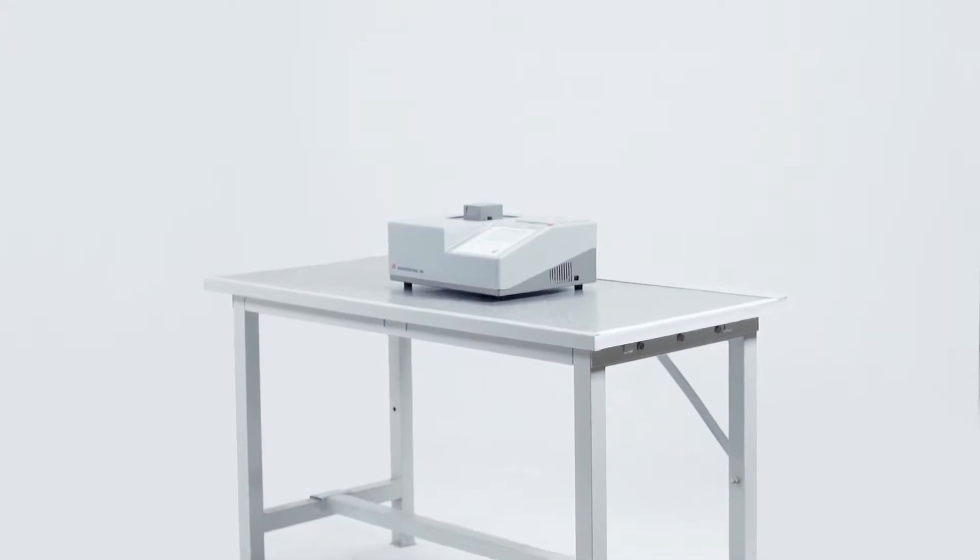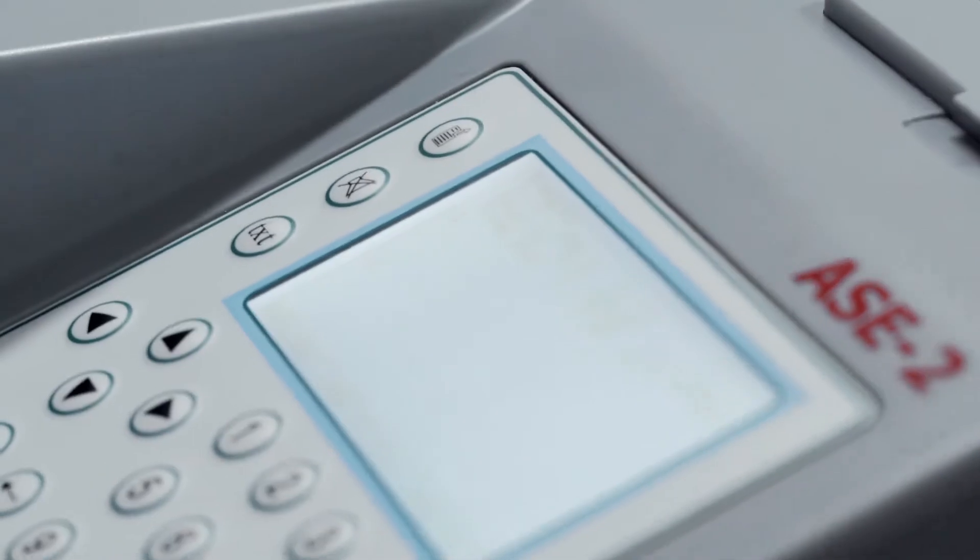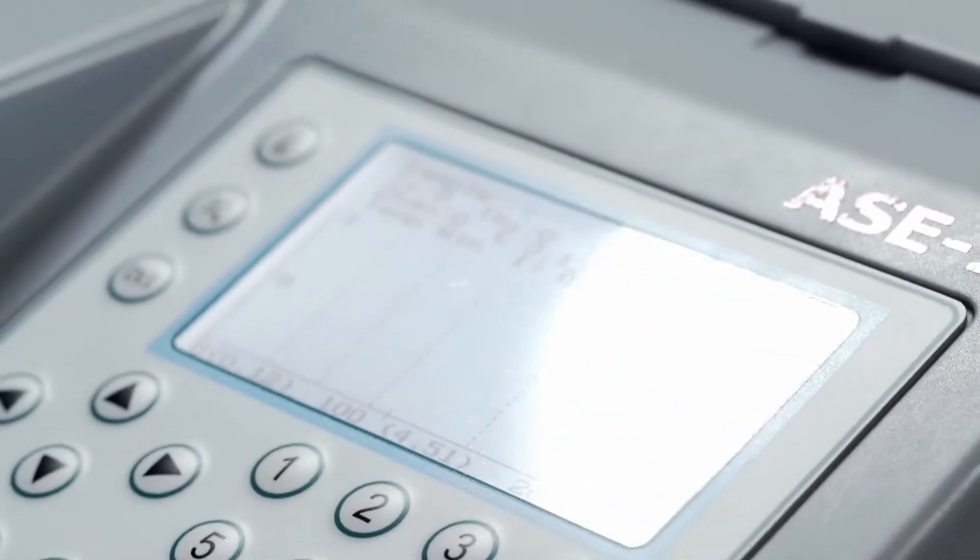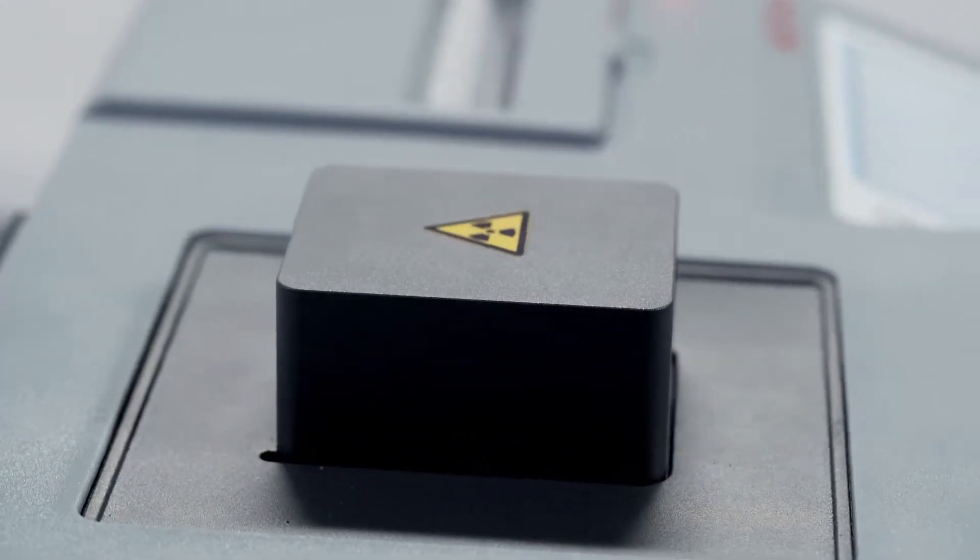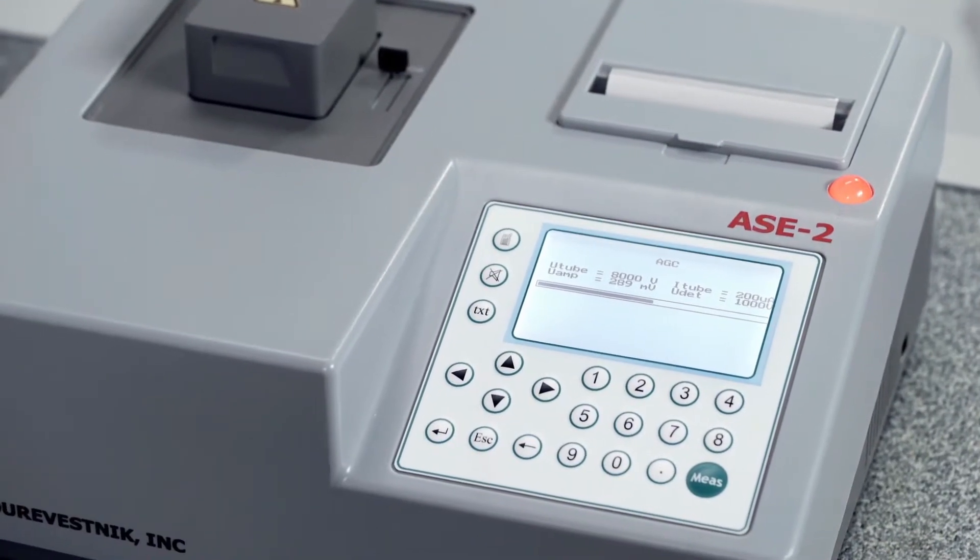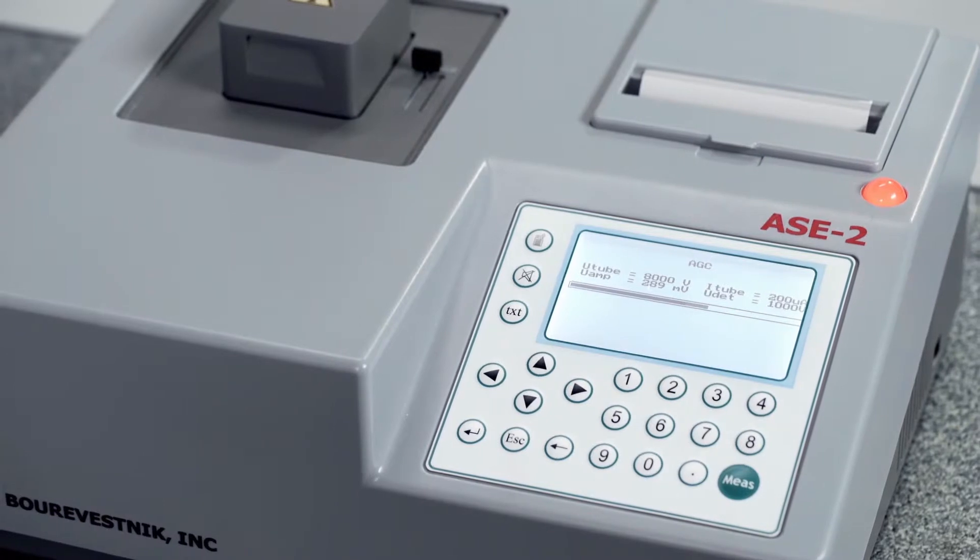X-ray fluorescent energy dispersive sulfur analyzer ASE2 realizes the reference method of sulfur mass fraction estimation in oil and oil products and allows analysis of motor fuel, diesel fuel, kerosene, and fuel oil.